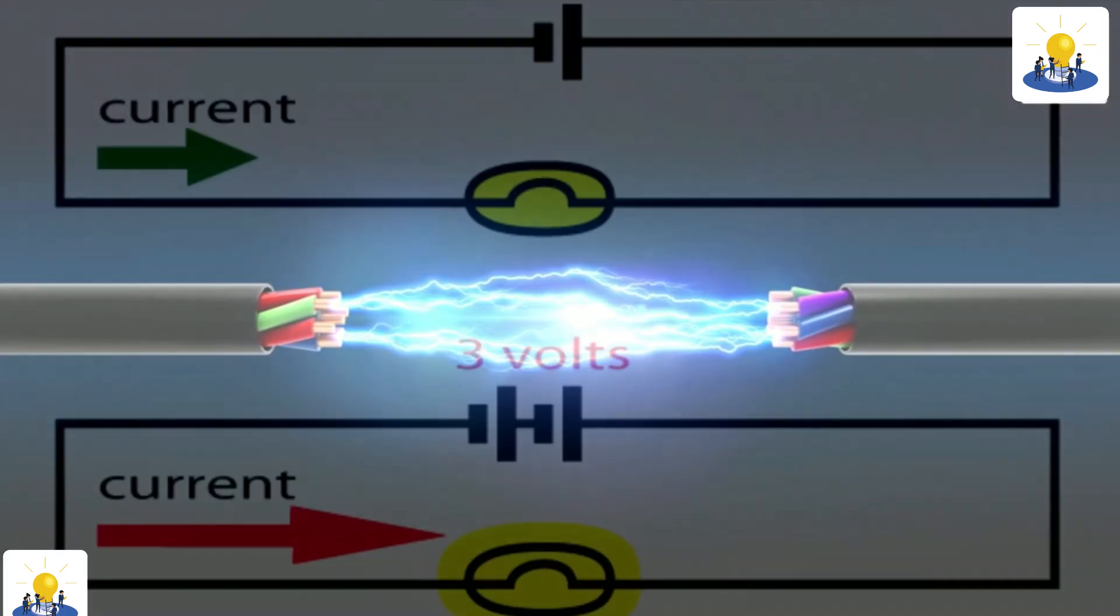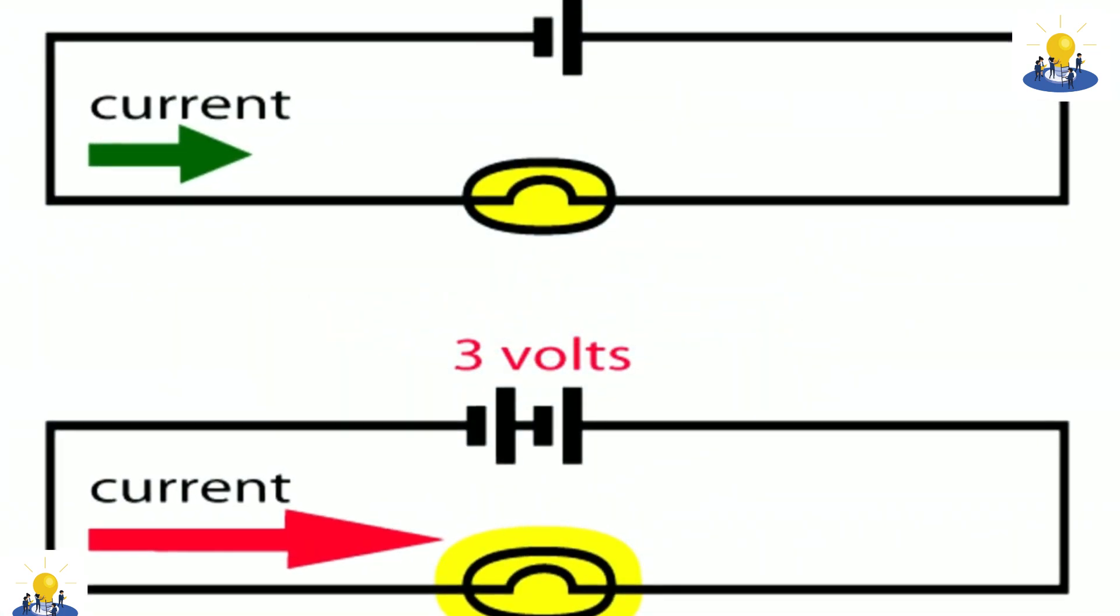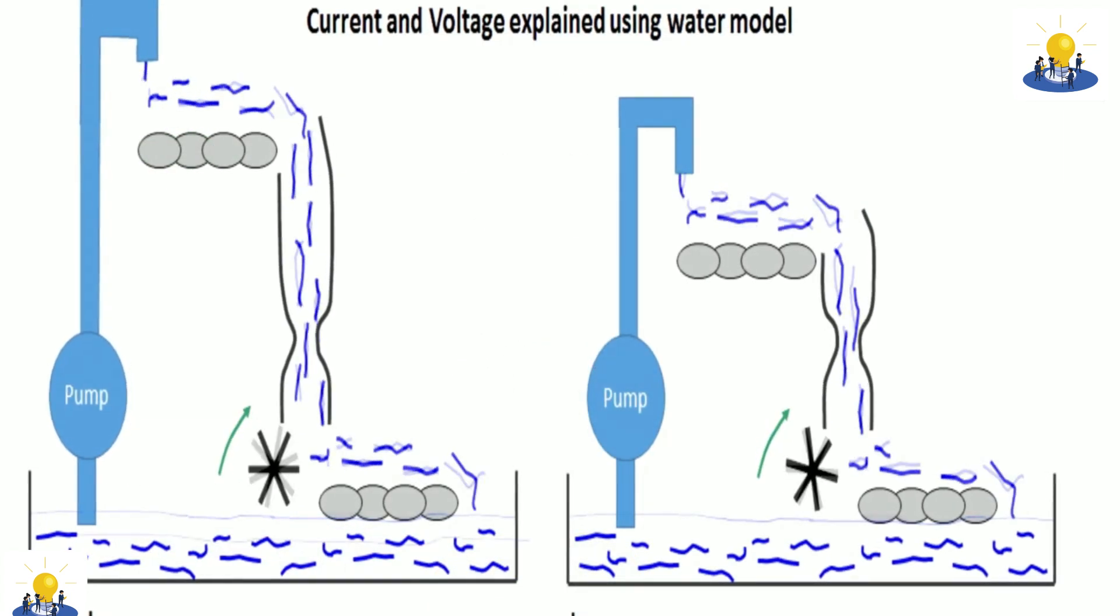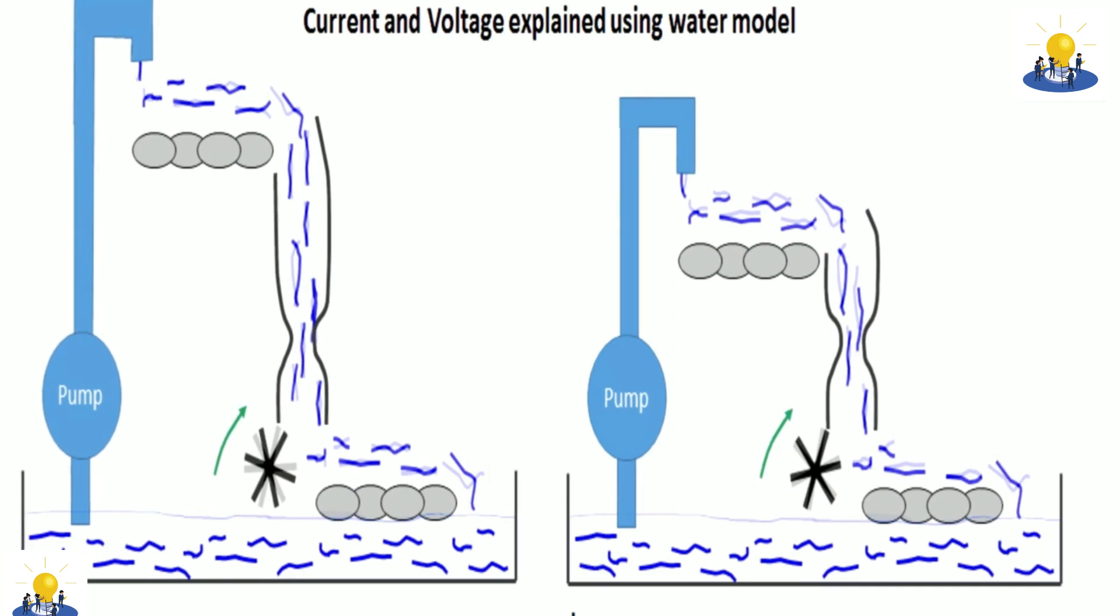If current can be compared to the flow of water through a hose, voltage can be compared to water pressure at the faucet. It's water pressure that causes the water to flow in the hose.